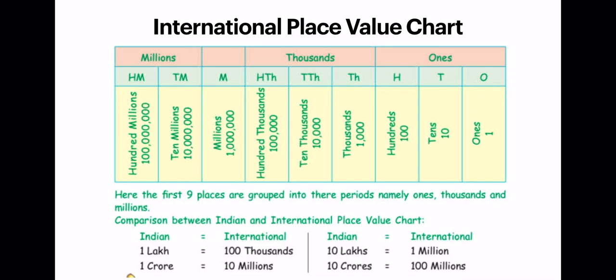In the international place value chart, we have three periods for nine place values. The three periods are ones, thousands, and millions. Each period has three place values — ones has ones, tens, and hundreds; thousands has thousands, ten thousands, and hundred thousands; millions has millions, ten millions, and hundred millions. Comparing the two: one lakh (Indian) equals one hundred thousand (international); one crore equals ten million; ten lakhs equals one million; and ten crores equals one hundred million.